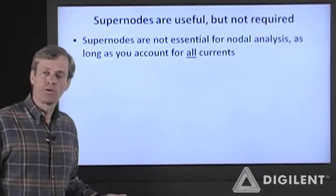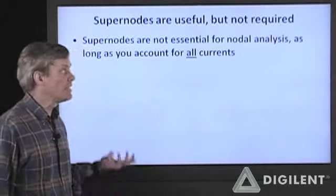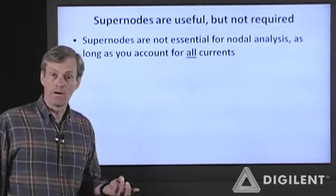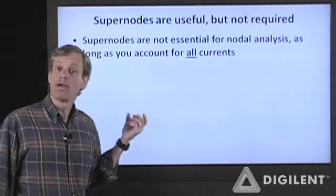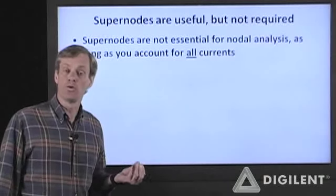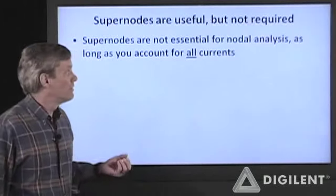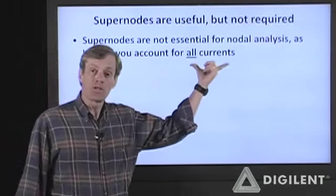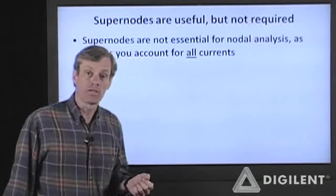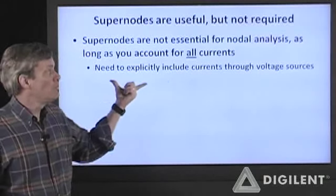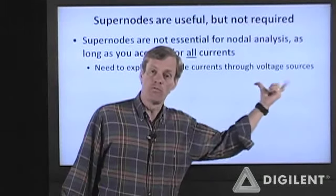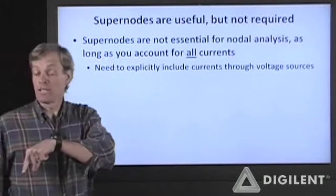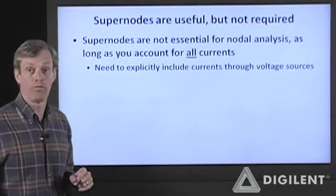If you don't recognize a supernode or don't want to use supernodes for some reason, you don't have to. As long as you follow KVL, KCL, and Ohm's law correctly, you don't need to do anything else. Nodal analysis is just a way to apply those tools extremely efficiently. If you don't want to use a supernode, just make sure that you account for all of the currents in the circuit. Specifically, you need to include the current that goes through the voltage source — there generally will be a current through the voltage source, so don't neglect it.